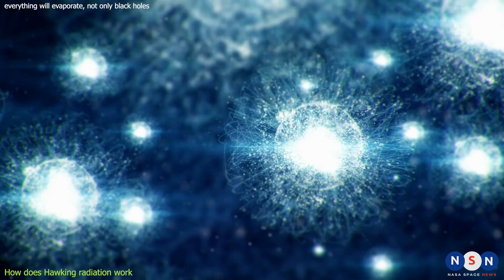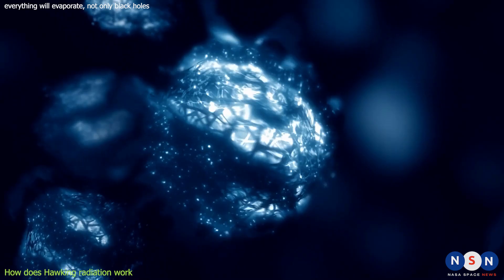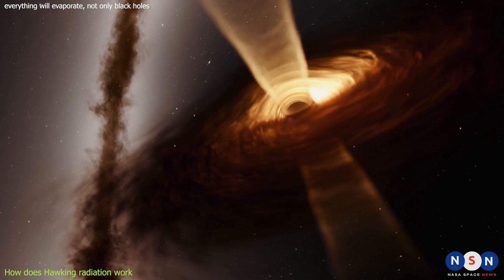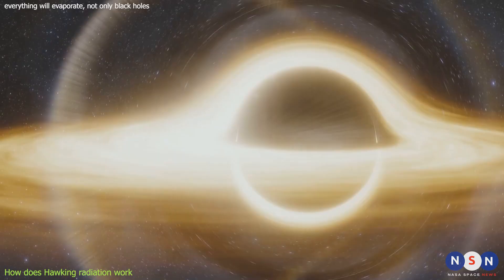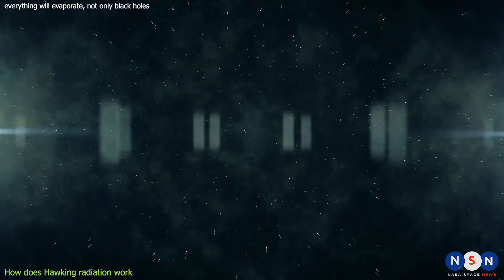Hawking radiation also depends on the type of particles that are emitted. Some particles are more likely to escape than others depending on their spin and charge. For example, photons and neutrinos are more likely to escape than electrons and protons. It also has some strange properties that defy our intuition. For instance, it does not depend on what falls into the black hole. It only depends on the mass, charge, and spin of the black hole itself. This means that all black holes of the same type look alike to an outside observer. This is known as the no hair theorem.